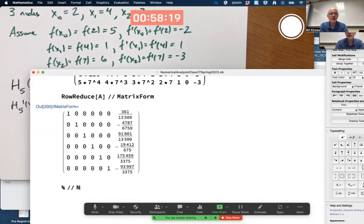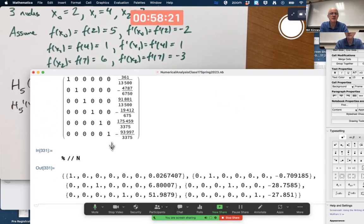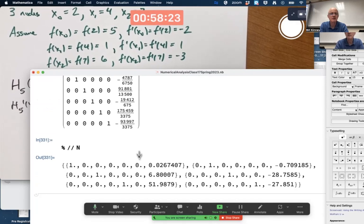There are those beautiful fractions that are the answers. And then take that output and do slash slash capital N to get numerical approximations. So it looks like A is about 0.0267407. B is this. Then C, then D, then E, then G.